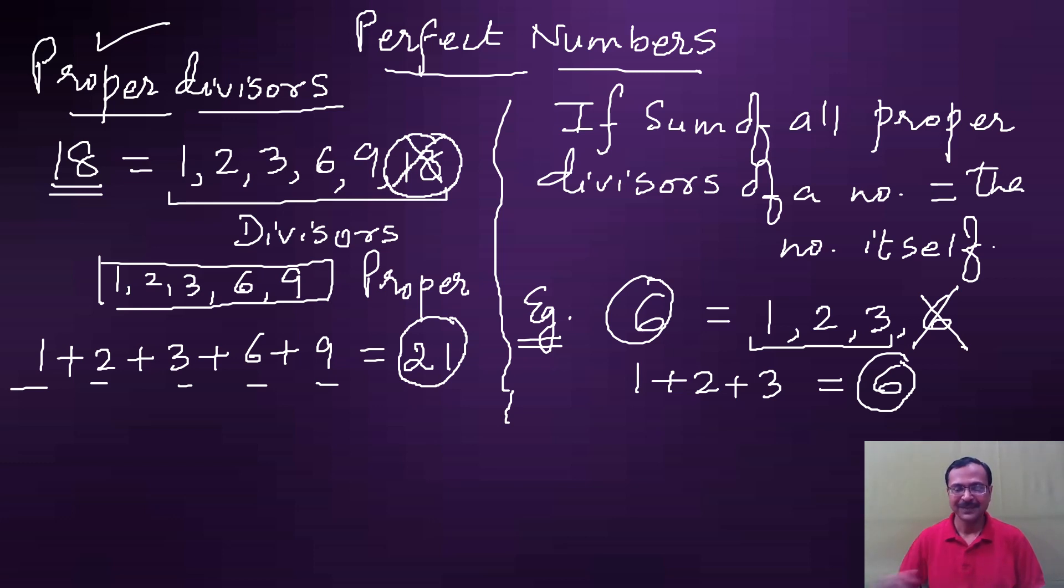Euclid was the person who told us how to find perfect numbers. You will be really amazed when I tell you the method which he adopted for deriving perfect numbers. There is an expression which he gave, and he said that this expression can be a perfect number subject to a particular condition. I am going to discuss that condition with you now.